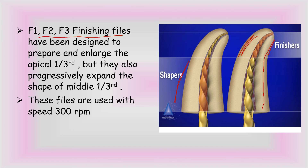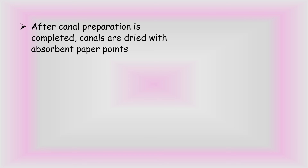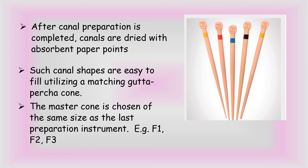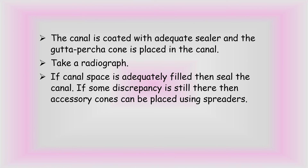These files are mostly used at a speed of 300 rpm, which is the manufacturer-recommended speed. After canal preparation is completed, the canals are dried with absorbent paper points. Such canal shapes are easy to fill using the matching gutta-percha cone. The master cone is chosen of the same size as the last preparation instrument — for example, if the last instrument was F1, we choose an F1 gutta-percha cone. The canal is coated with an adequate sealer and the gutta-percha cone is placed. A radiograph is taken, and if the canal space is adequately filled, the canal is sealed. If some discrepancy remains, accessory cones are placed using spreaders to completely seal the root canal.